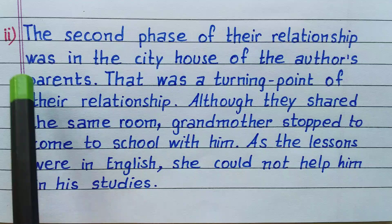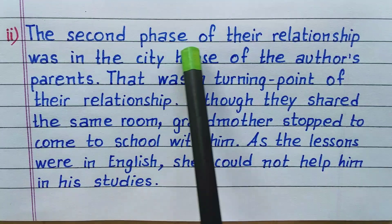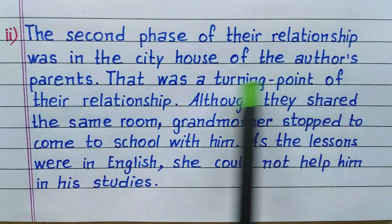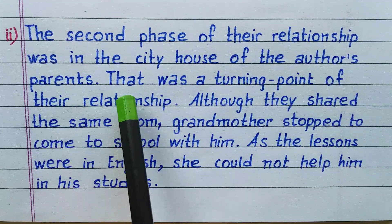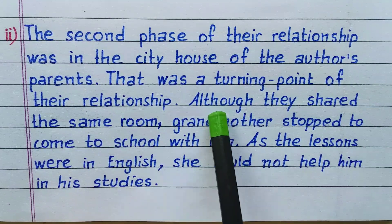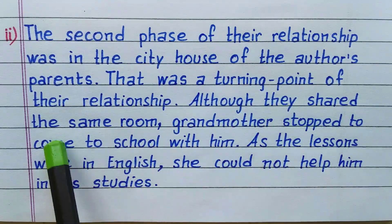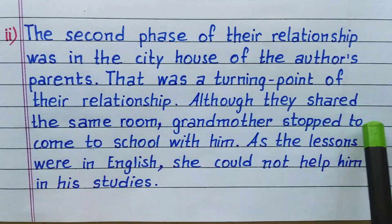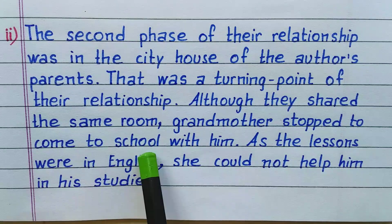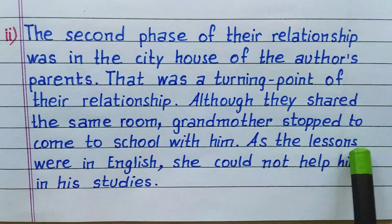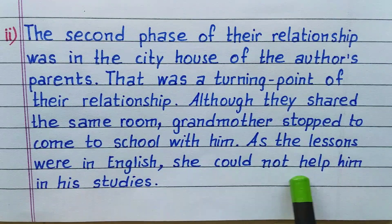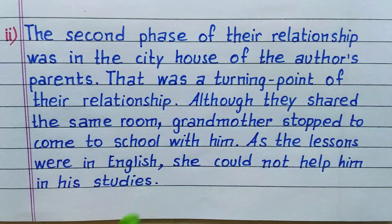Number 2: The second phase of the relationship was in the city house of the author's parents. That was a turning point of the relationship. Although they shared the same room, his grandmother stopped coming to school with him. As the lessons were in English, she could not help him in his studies.